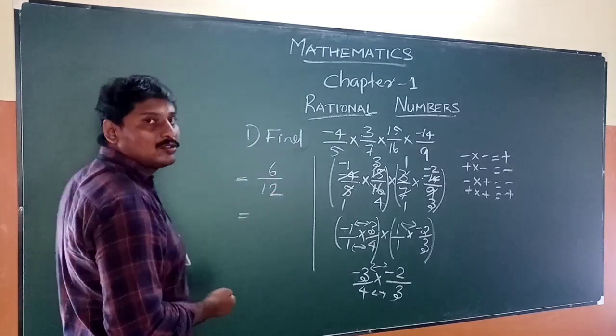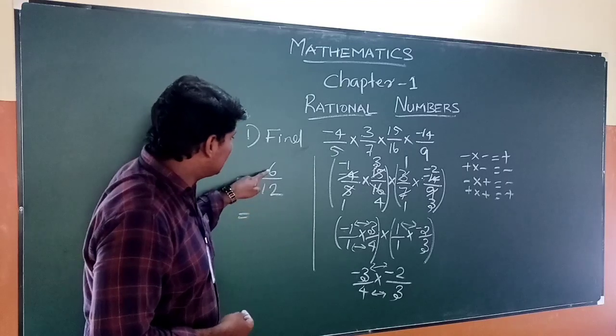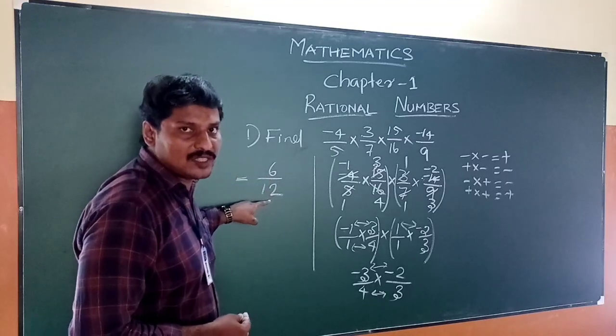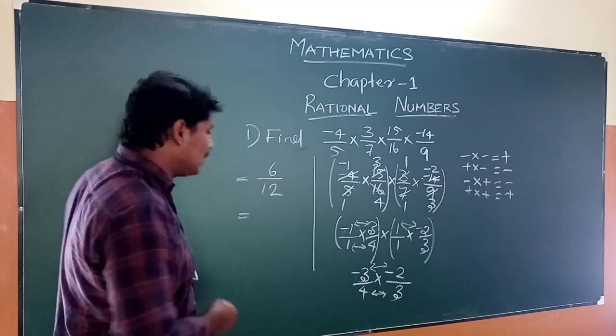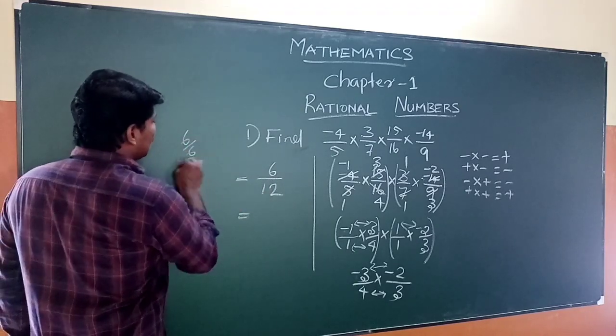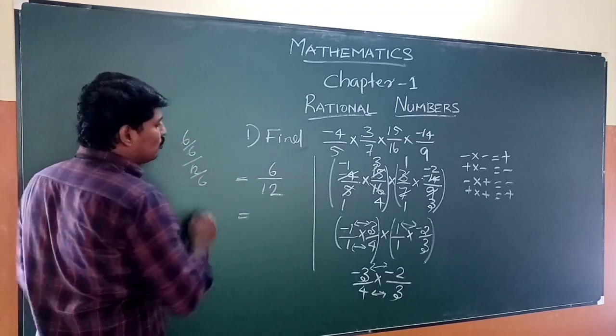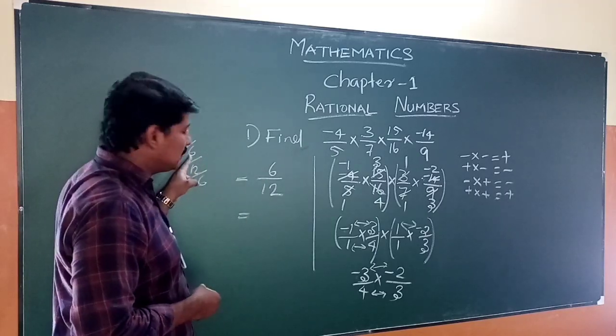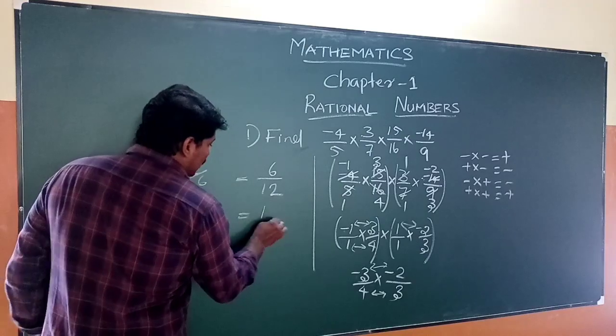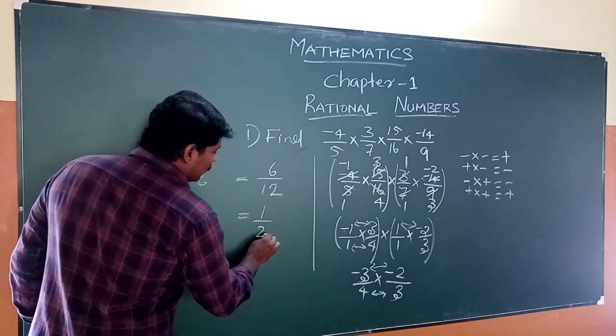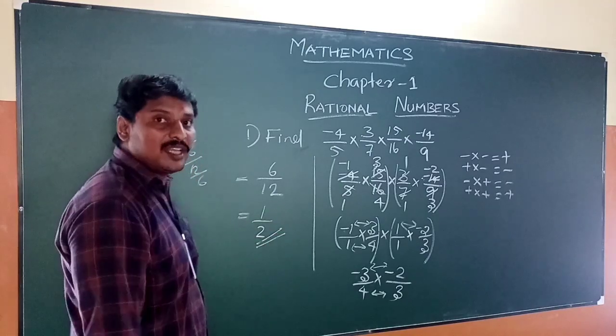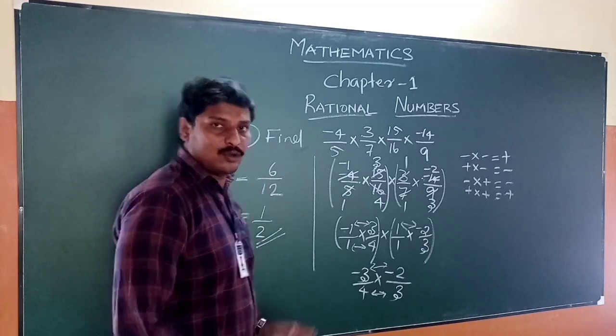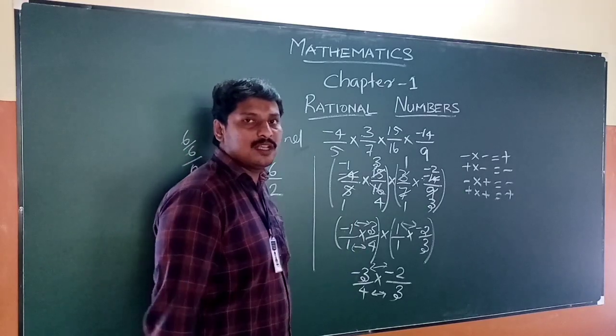We have 6/12. To simplify, we divide both numerator and denominator by their common factor 6. 6 divided by 6 is 1, and 12 divided by 6 is 2. The answer is 1/2. I hope you understood this topic. Thank you.